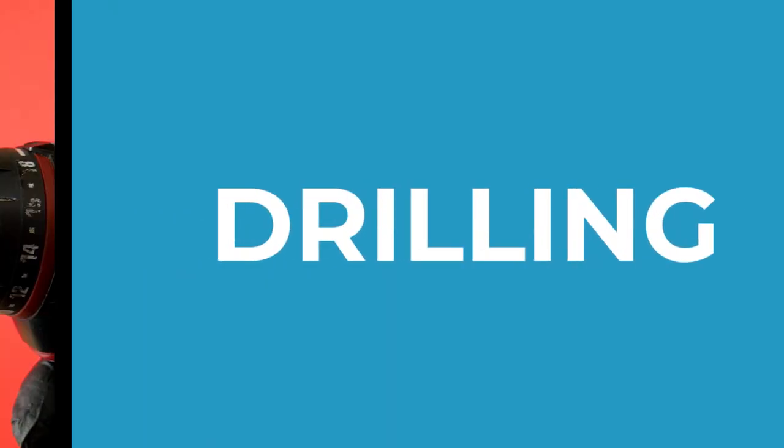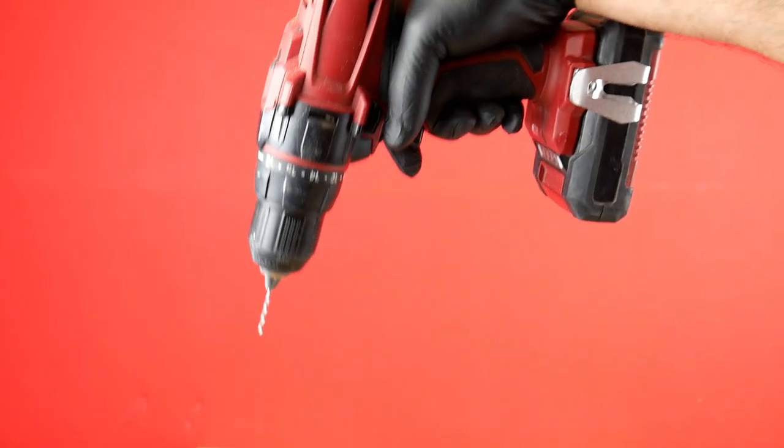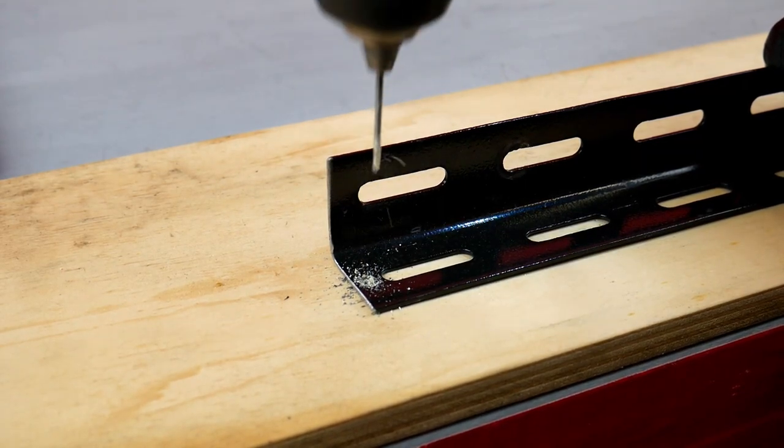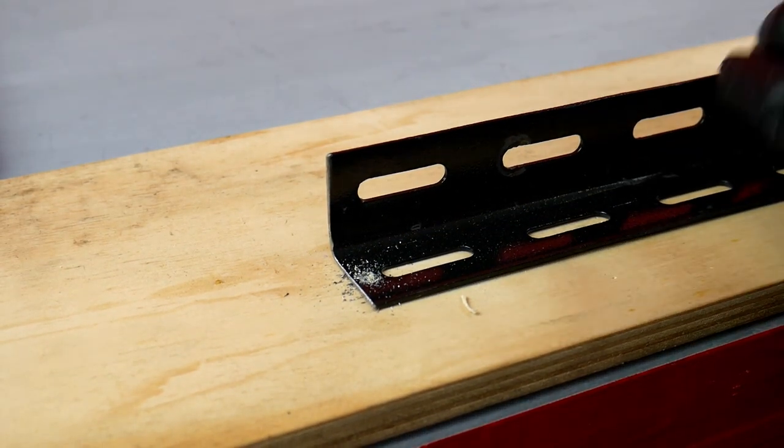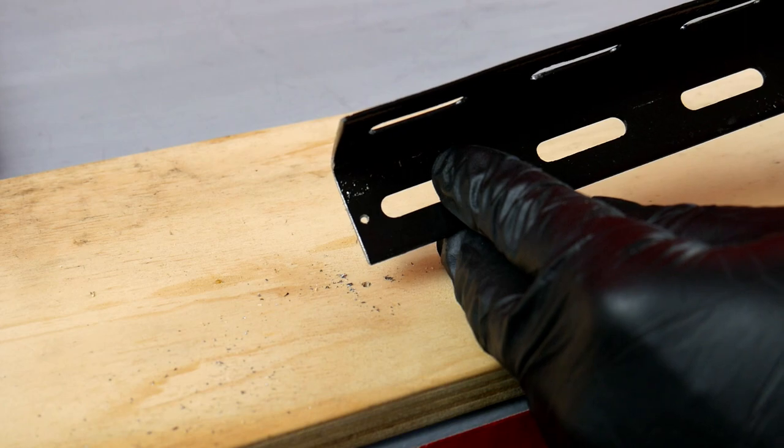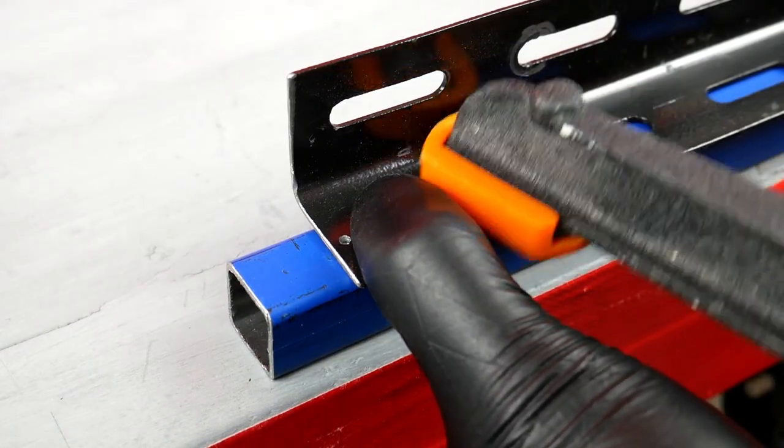Now it's time to drill some 2mm pilot holes to guide the larger drill bit. To stop my drill bit from wandering around the place, I drill a hole in some scrap as a guide for my drill bit. I clamp the guide over the crosshairs that I've made.